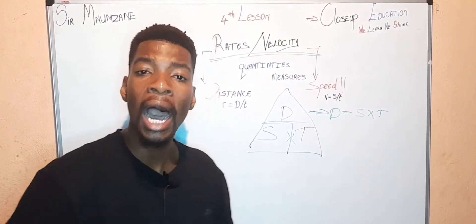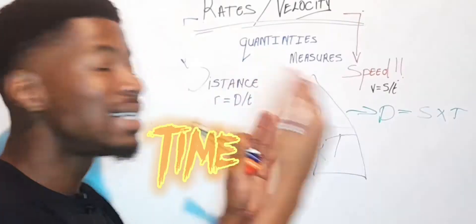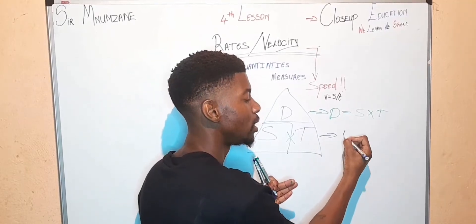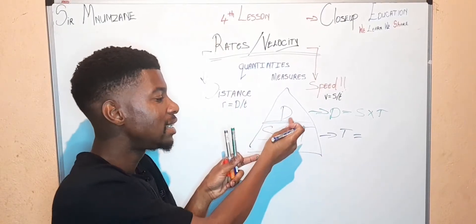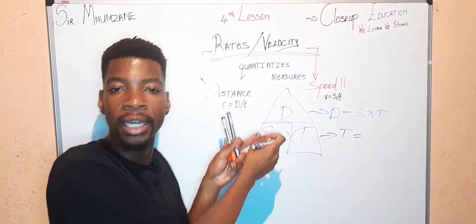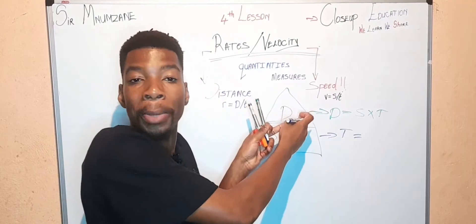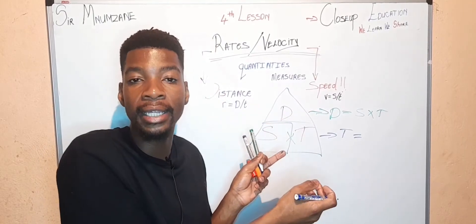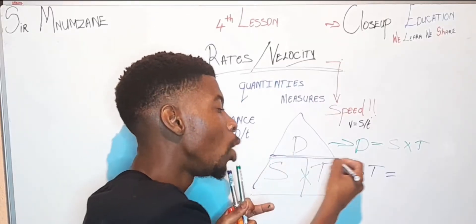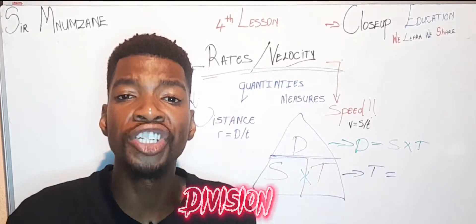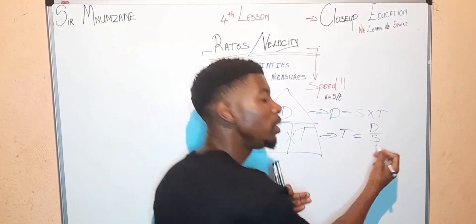How do we use the very same diagram to get our time? Time equals what's left — distance and speed. There is obviously a numerator and a denominator, so this line represents division: time equals distance divided by speed.